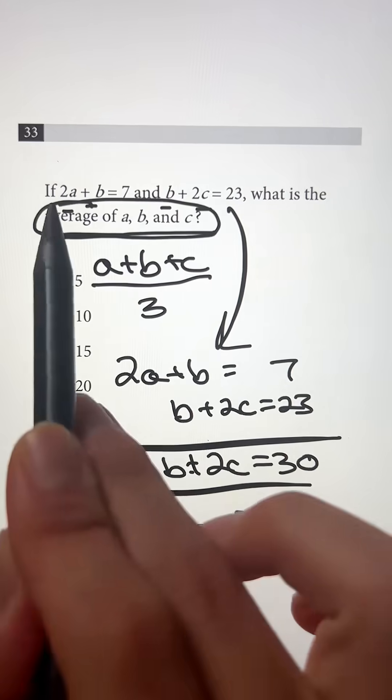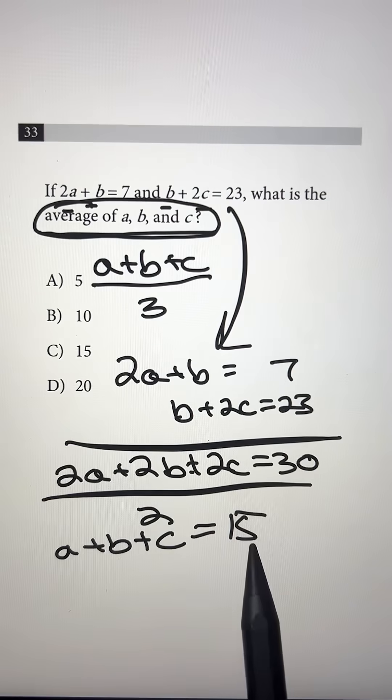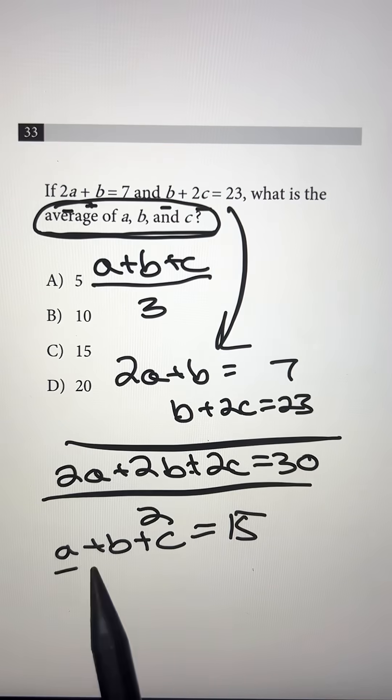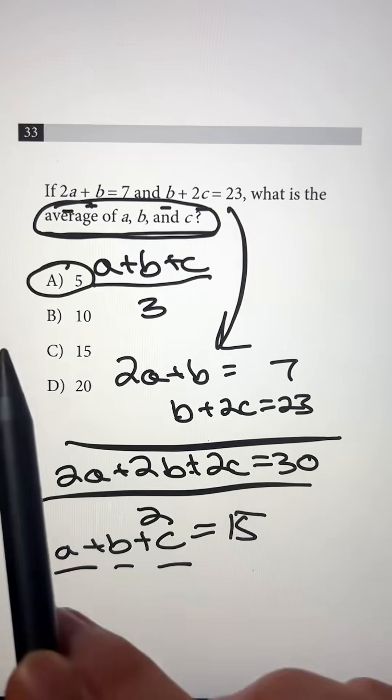And now we want the average of a plus b plus c. So in order to do that, we just take 15, divide that by the number of things. So 1, 2, and 3. That's going to be 15 divided by 3 or answer choice A.